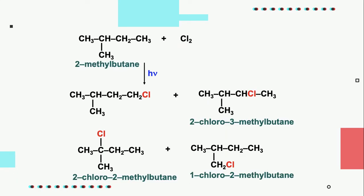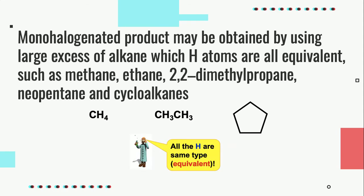The monochlorination of 2-methylbutane produces four different forms of products. A monohalogenated product may be obtained by using a large excess of alkane in which all hydrogen atoms are equivalent — meaning they have the same class of carbon — such as methane, ethane, 2,2-dimethylpropane, neopentane, and cycloalkanes.